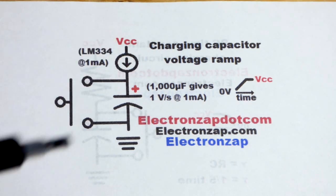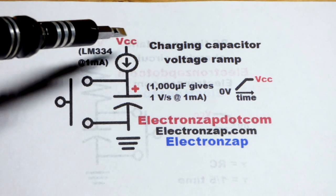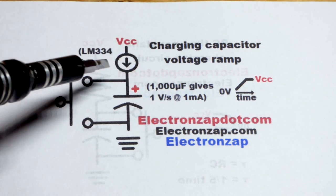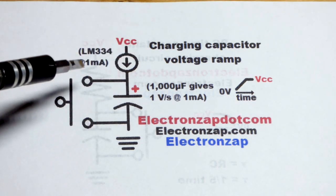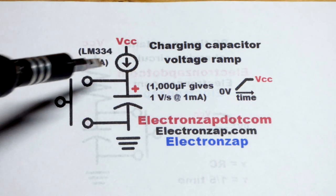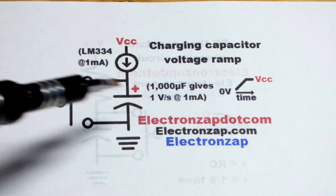With a current source, as long as there's a big enough voltage difference between the capacitor and the supply, you're going to get the current that you have set. And for the LM334, I think that's up to about a volt from the power supply. We'll look at that in this video.